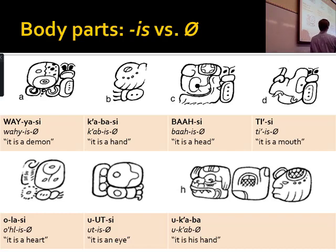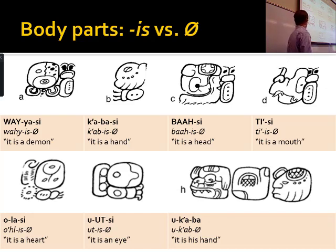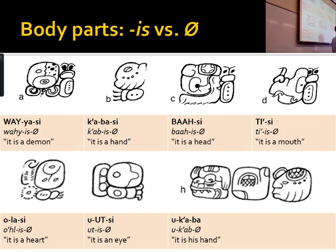Then you have body parts, which similarly take a suffix when they're not possessed — kind of makes sense. So 'ul' when possessed becomes 'yul'; when unpossessed it's 'olis.' 'Ut' or 'hut' — 'utis' when not possessed. 'Kab' — arm — 'abis' when not possessed. The idea is that these are things which are inherently possessed, and when they're not possessed they require a special suffix.